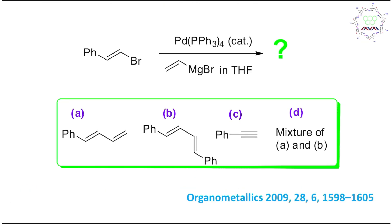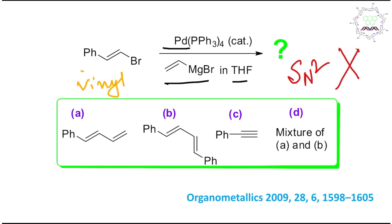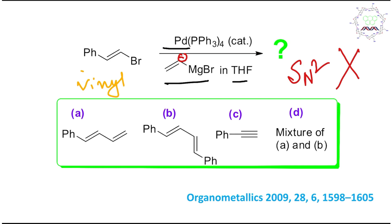Before going to the detail, look at what reaction I have given. If you can understand that, it's very easy. First of all, this is a vinyl bromide, and here we have palladium tetraphenylphosphine — Pd(PPh₃)₄ — vinyl magnesium bromide, and THF. Remember, in this case typical SN2 or nucleophilic substitution is not possible, although the Grignard carbon is nucleophilic. That's why we need a palladium catalyst.